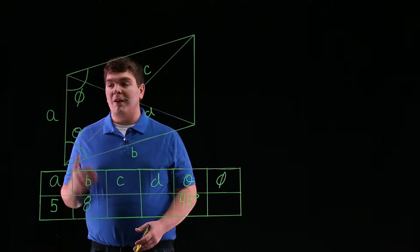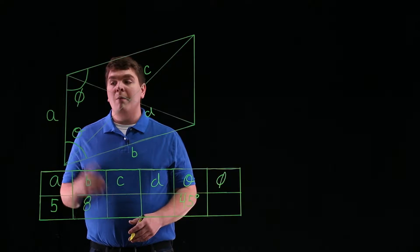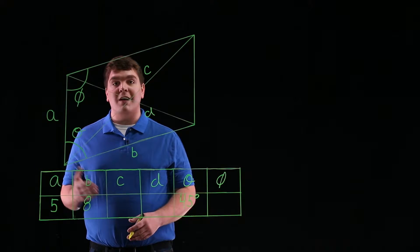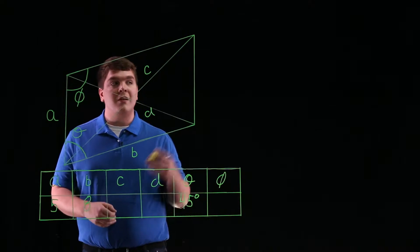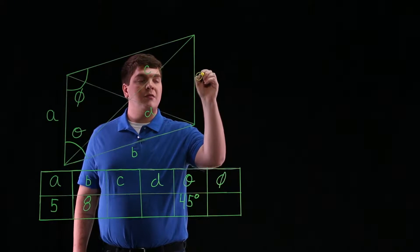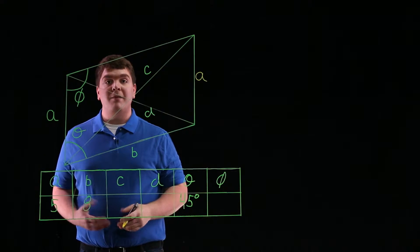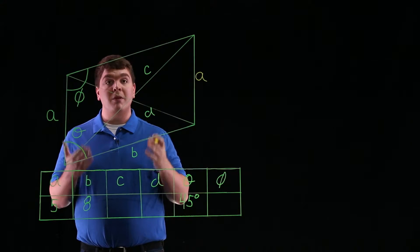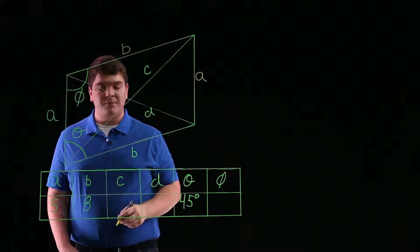Let's begin by noting that since we have a parallelogram, both of the opposite sides are equal, so both the left and the right side have length A, and the bottom and the top side have length B.